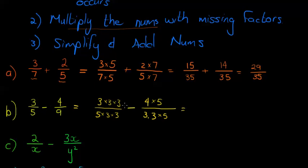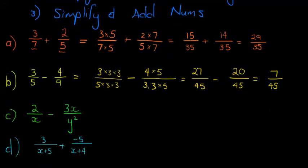This time it becomes 27, that's 3 times 3 times 3 over 45 minus, and this one is 20 over 45, which gives me 7 over 45. Again, 7 is a prime number. Can 7 divide into 45? No, it can't. So then this is in its simplest form.